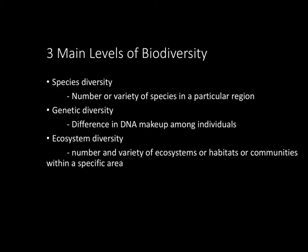Let's start off with examining the three main levels of biodiversity. First off, we have species diversity — that's basically the number or variety of species in any particular region. Within species diversity, there are a couple of key terms you should know. The first is species richness, which is the number of a certain species. The next term is relative abundance, which is the extent to which different species are similar in the number of individuals in any given area.